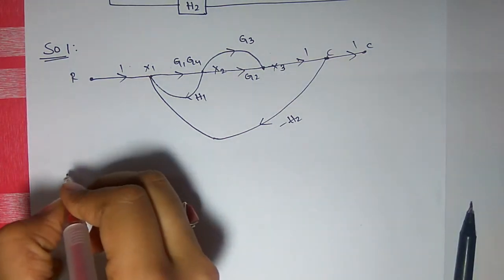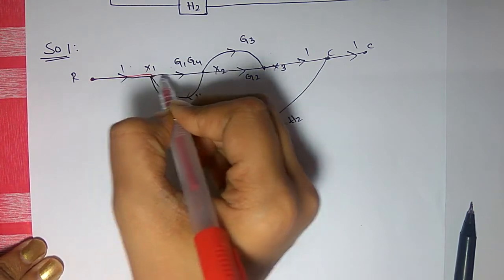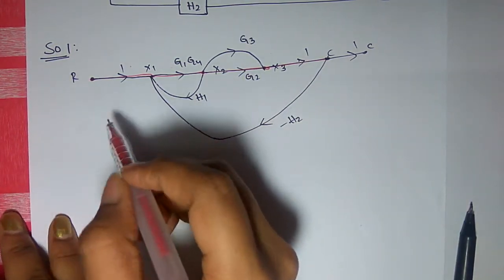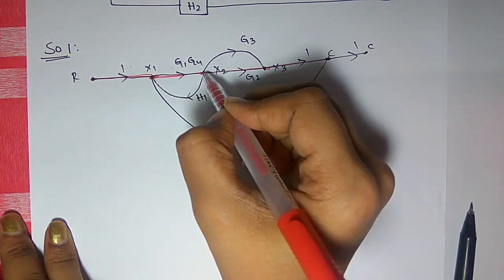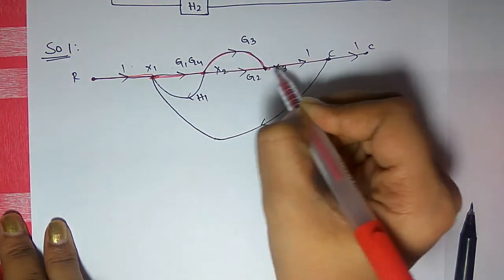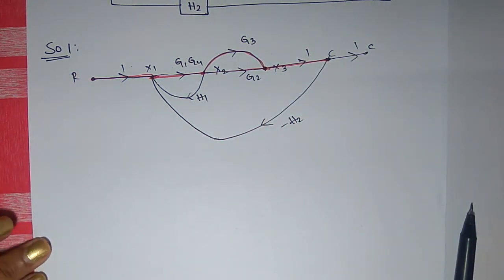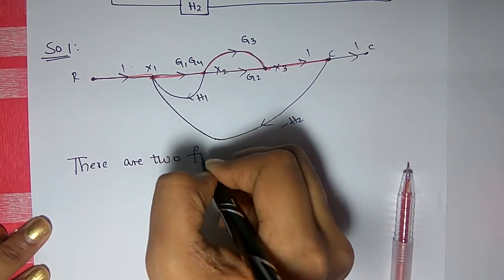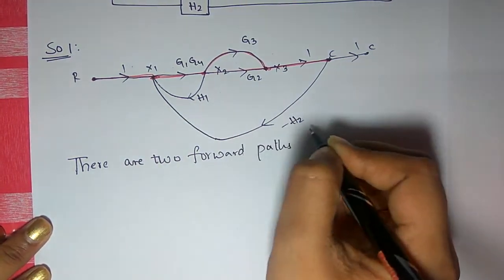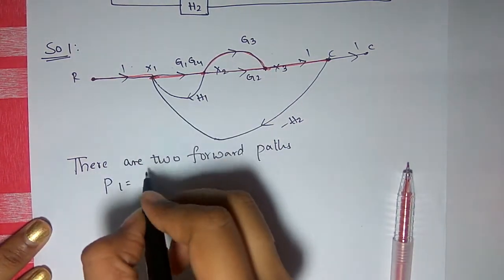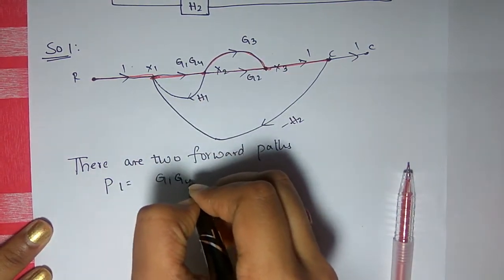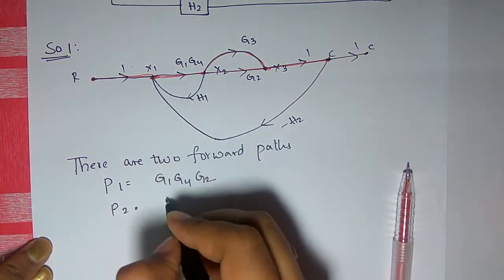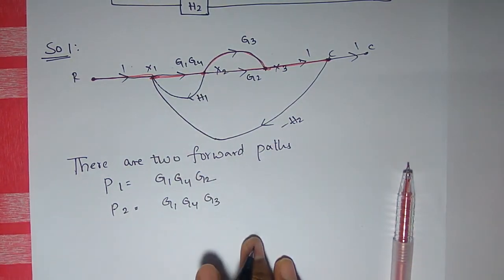Now identify the forward paths. Starting from R: you can go to X1, X2, X3, and to C — this is the first forward path. The second forward path is also R to X1, X2, then via G3 to X3 and C. So there are two forward paths. P1 = 1 × G1·G4 × G2 = G1·G2·G4, and P2 = G1·G4 × G3 = G1·G3·G4.